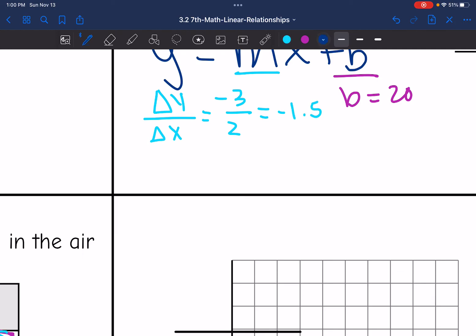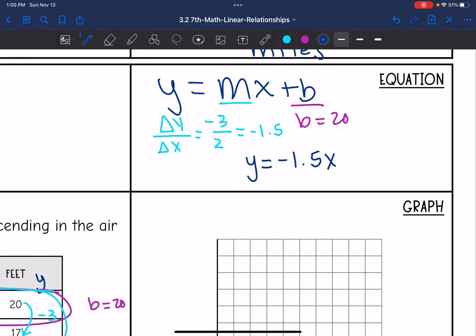So the equation in y equals mx plus b form would be y equals negative 1.5x for the slope, or for the rate of change, plus the y-intercept of 20.